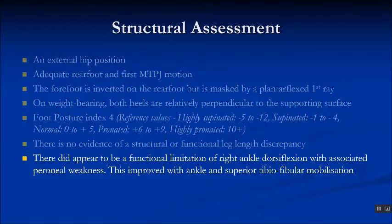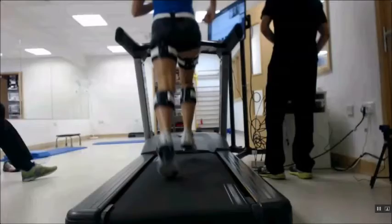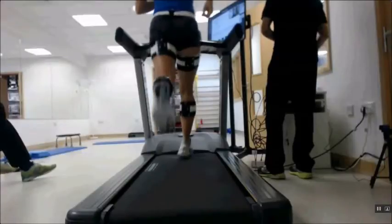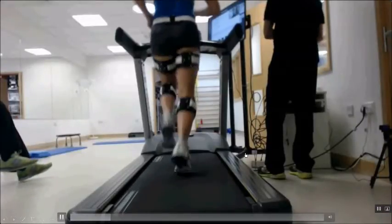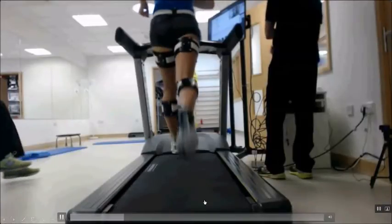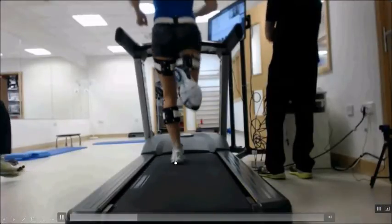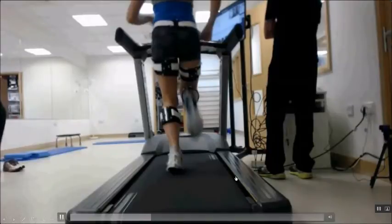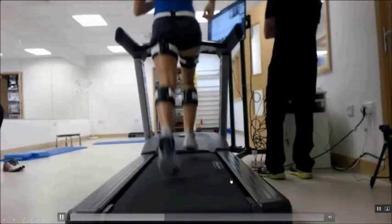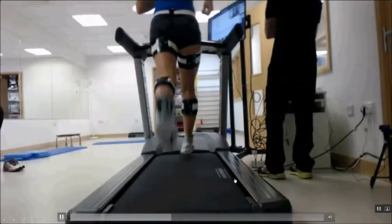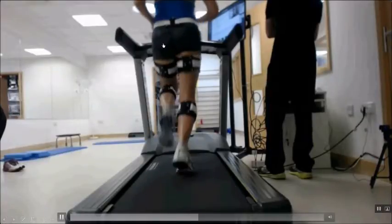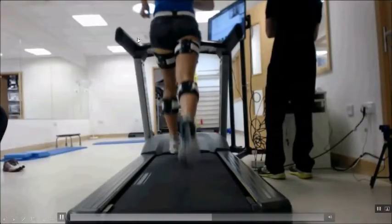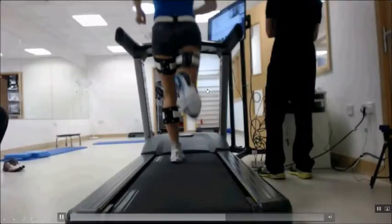This improved with mobilisation of the ankle and the superior tibio-fibular joint. Looking at her video, we can see quite clearly that the shoe appears to be everting a lot. On the left side she has a heel strike and on the right side you'll note a forefoot strike. If we look at the hip, we're getting a lot of left-sided drop when she's on the right leg and to a lesser extent on the left leg.